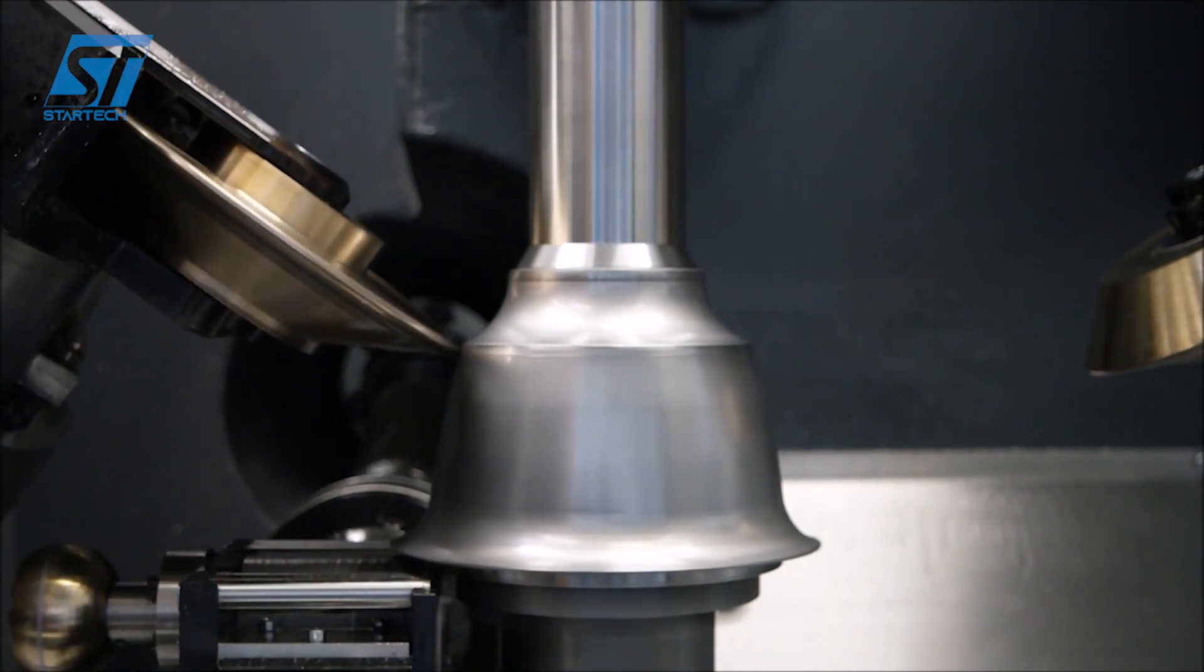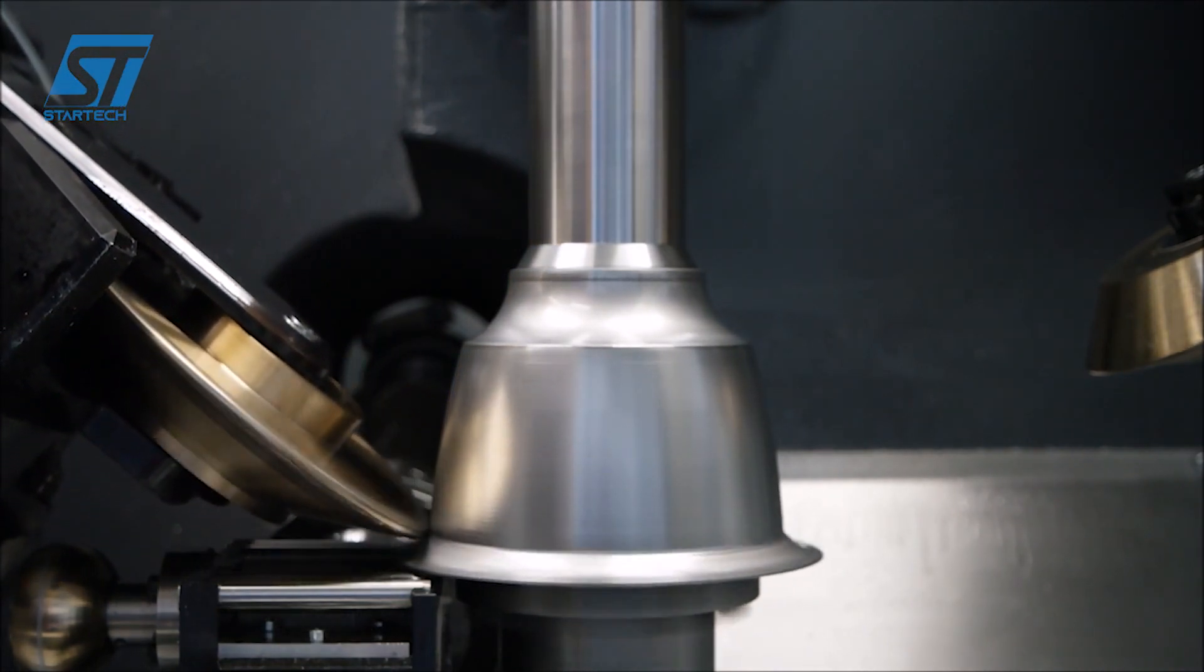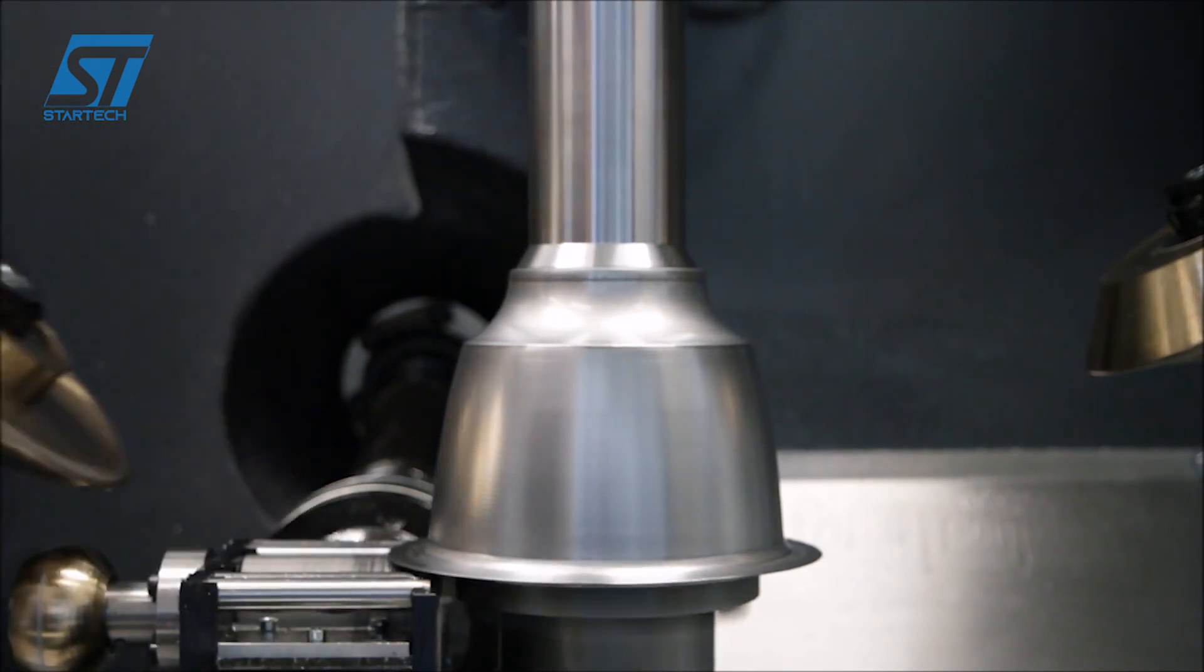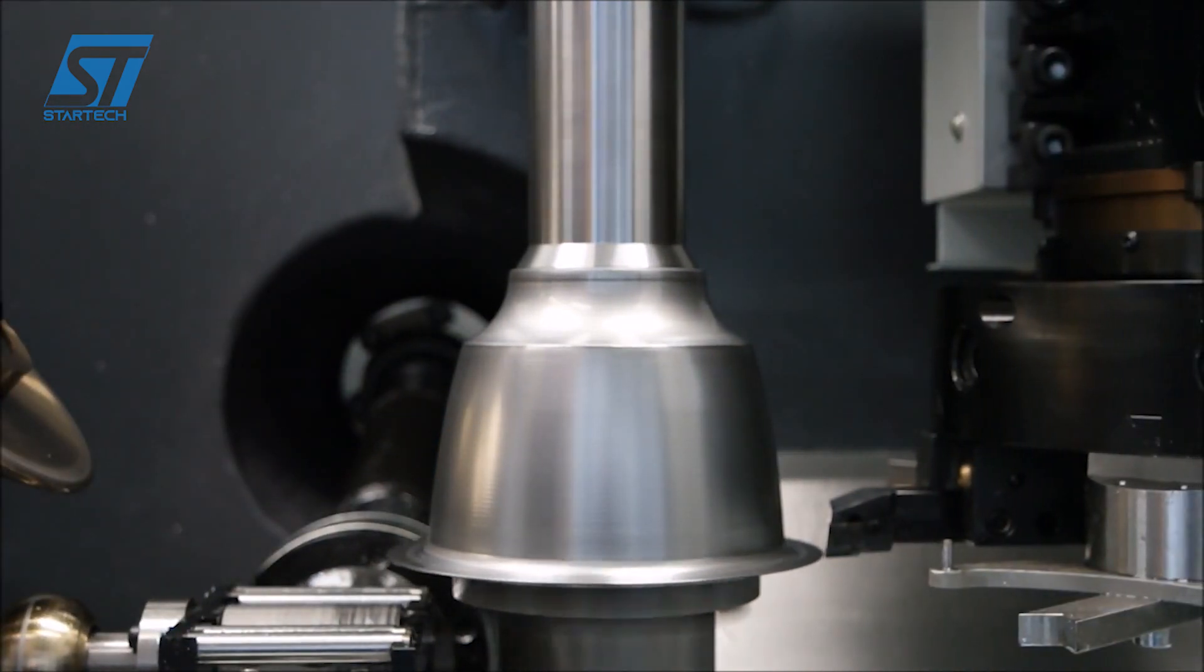Often, several passes are needed to achieve the final shape, especially with thicker or harder materials like steel. Coolant is essential to manage heat generated during the process and to lubricate the roller tool.